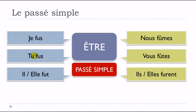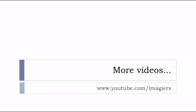So: je fus, tu fus, il fut, elle fut, nous fûmes, vous fûtes, ils furent, elles furent — and that's it. You've got the passé simple forms of the verb être — to be. Voilà, j'espère que c'était utile. Au revoir et à bientôt, have a great day.